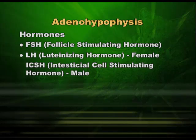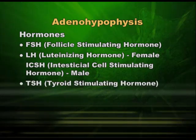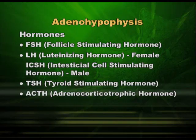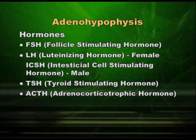The third hormone from the anterior pituitary is TSH, thyroid stimulating hormone, which acts on the thyroid and makes it secrete thyroid hormones. The fourth is ACTH, adrenocorticotrophic hormone. This hormone acts on the adrenal cortex, not on the adrenal medulla. The adrenal has an outer cortex and inner medulla — the medulla is part of the central nervous system, the cortex is part of the endocrine system. ACTH acts on the cortex, hence the name adrenocorticotrophic hormone.